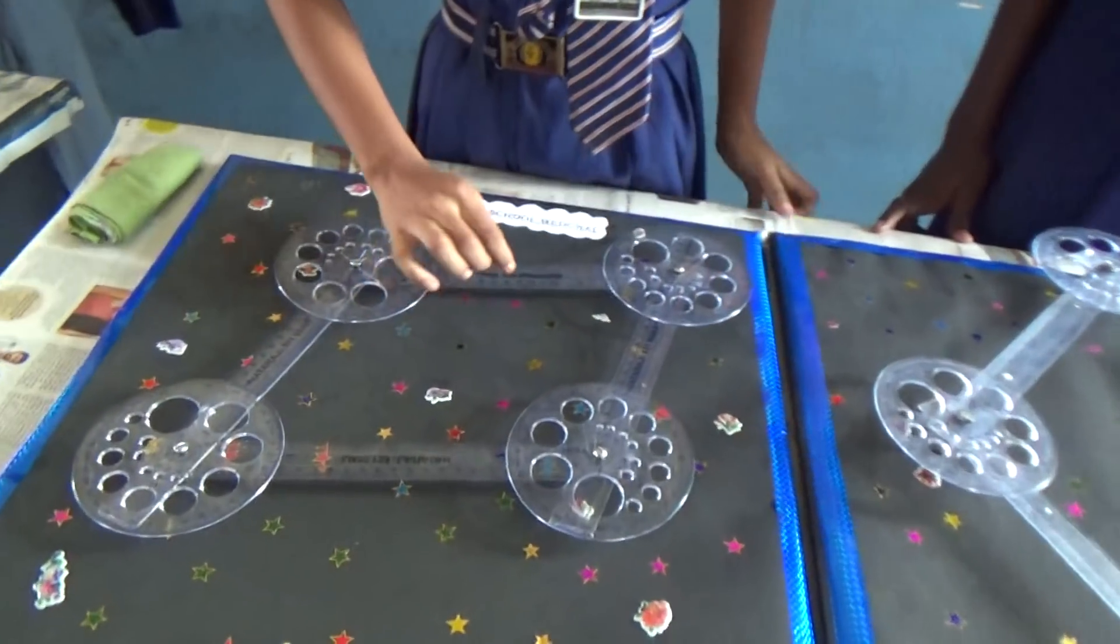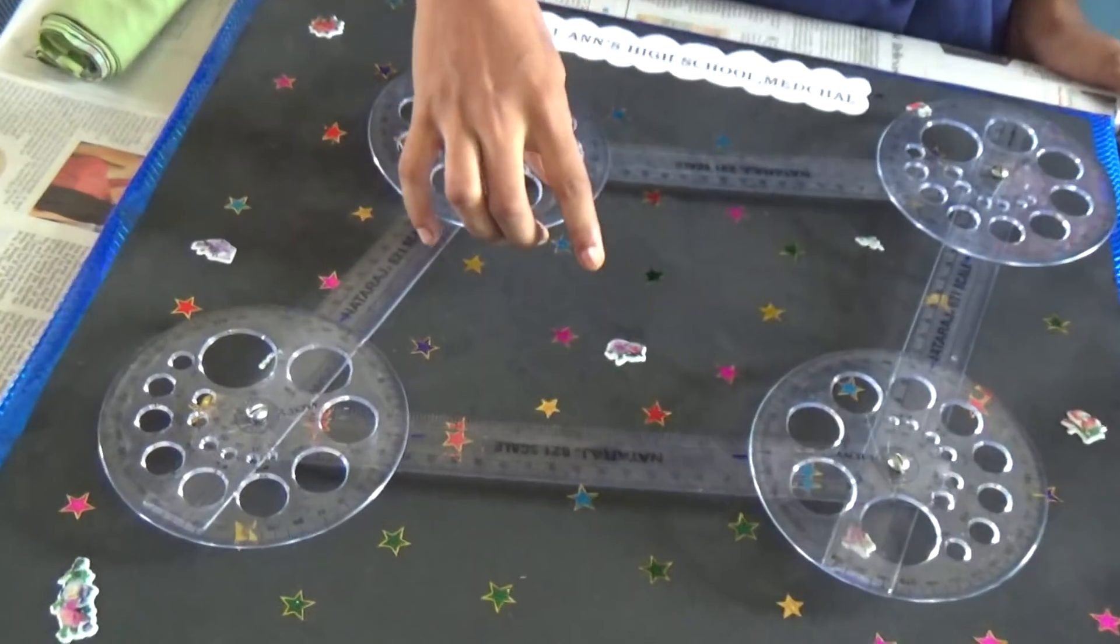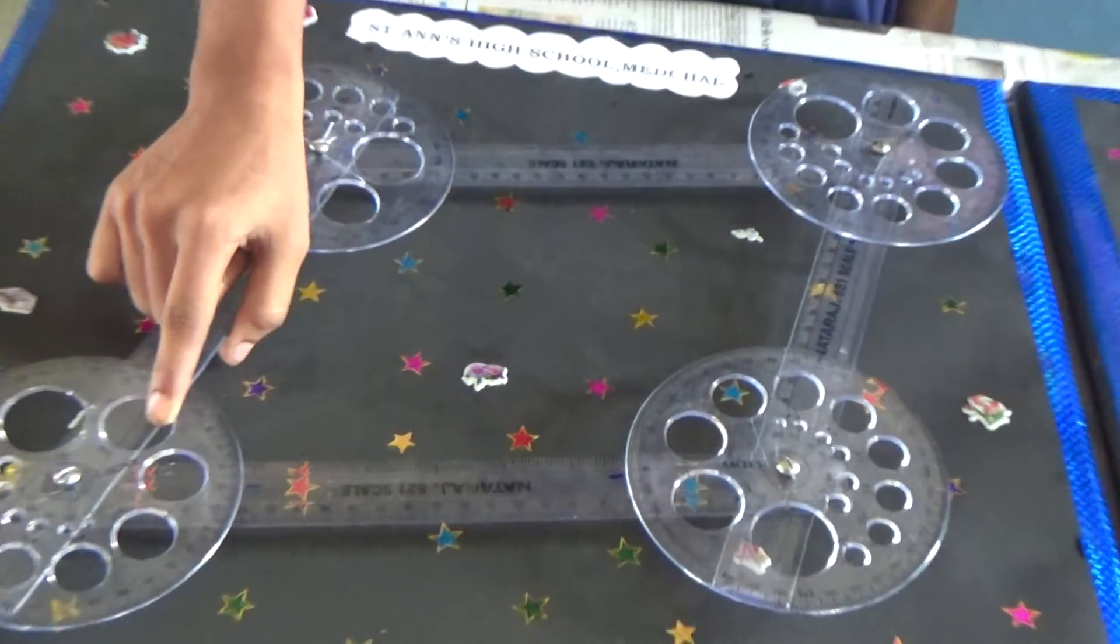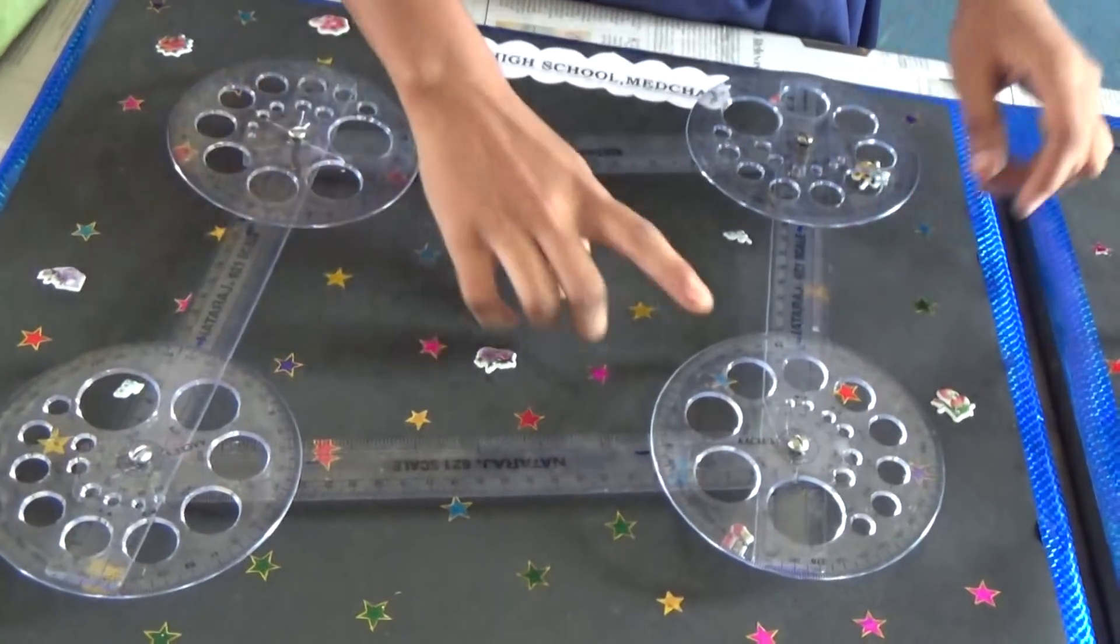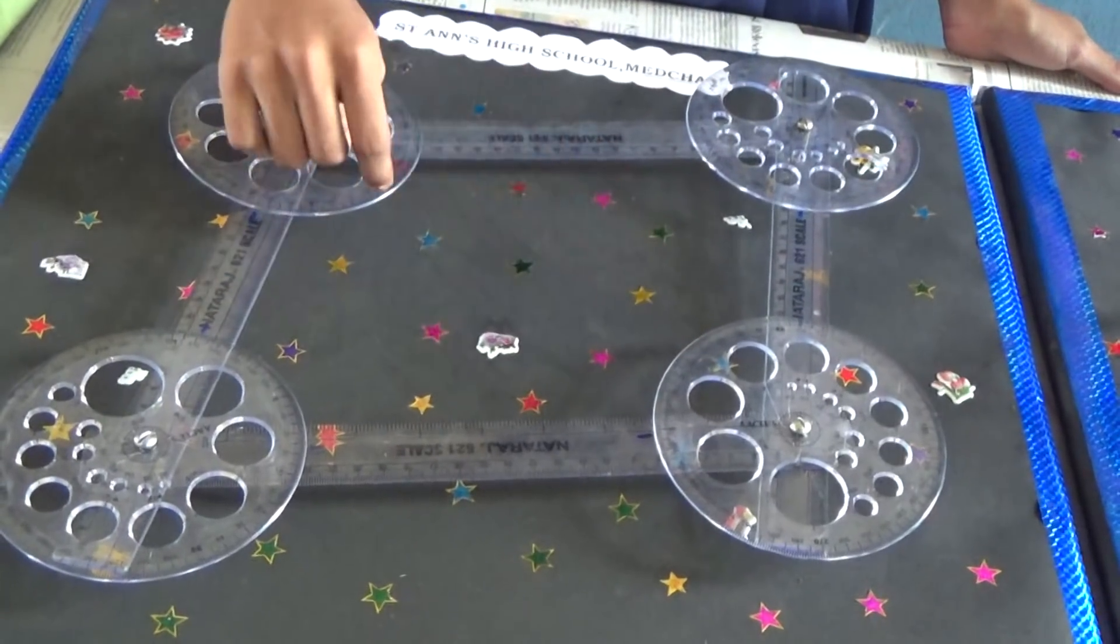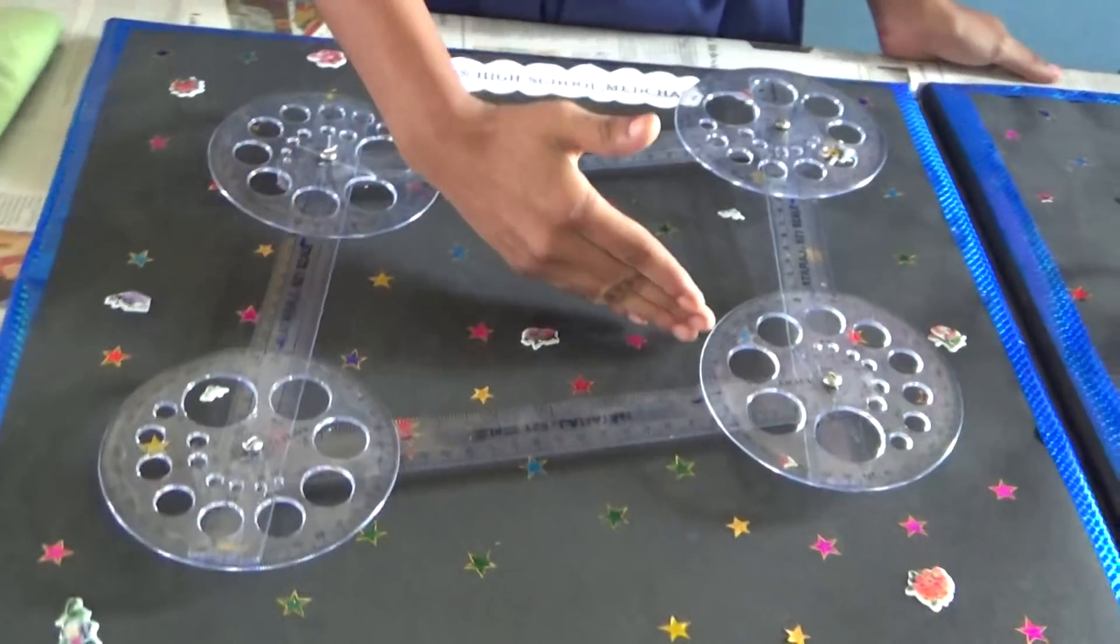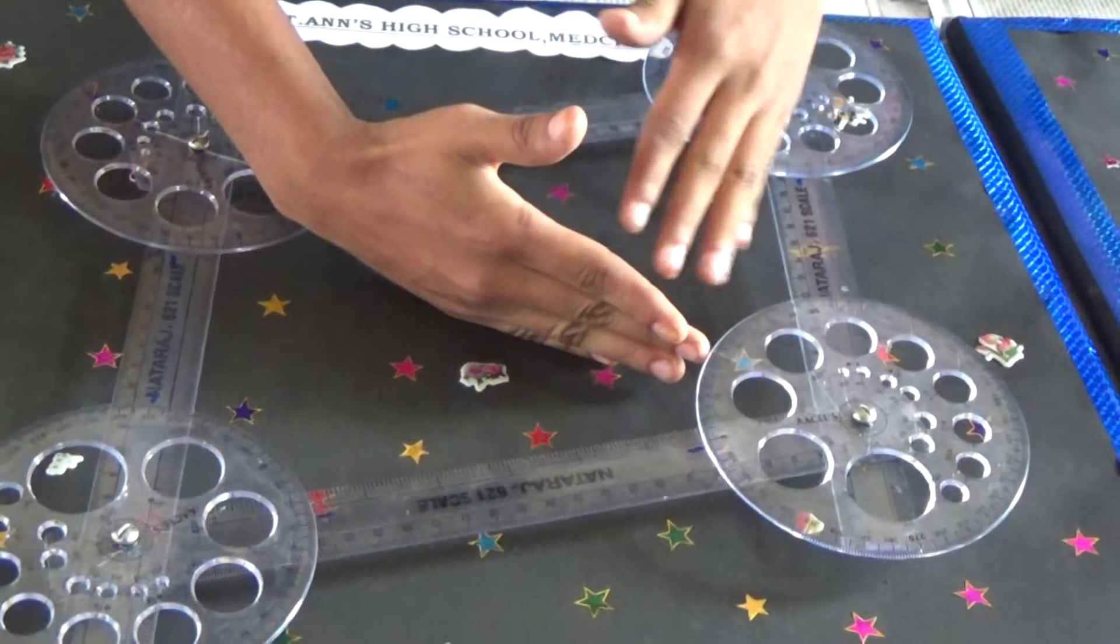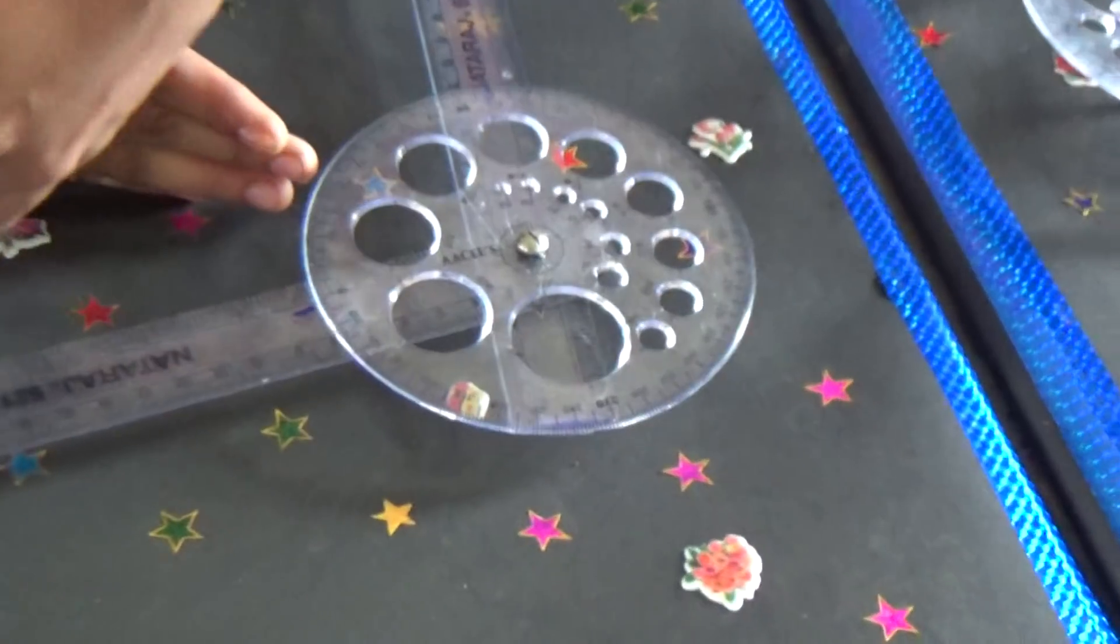In a parallelogram, opposite sides are equal. Opposite angles are equal. Sum of two adjacent angles are known as supplementary. And the diagonals bisect each other and they divide the parallelogram into two congruent triangles. You can observe here. First one is here and second one is here.